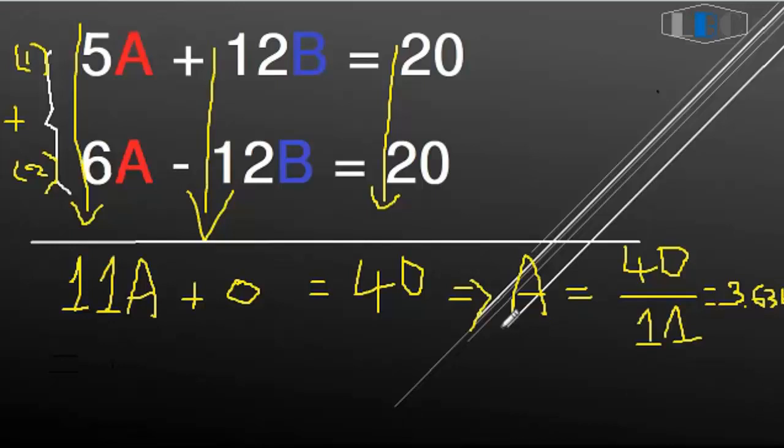And how do we find B? You can substitute A equals 3.636.